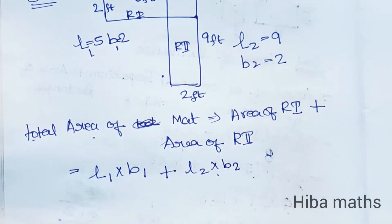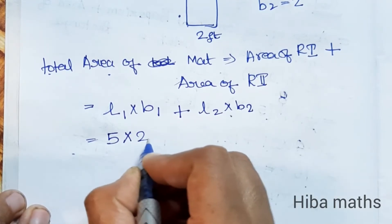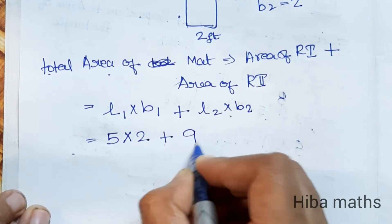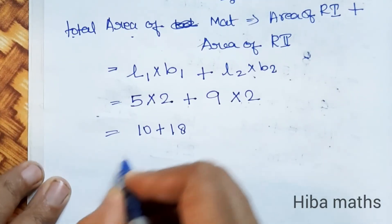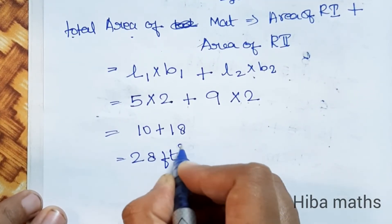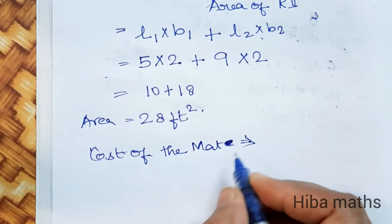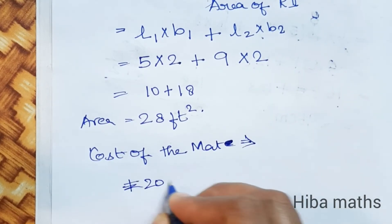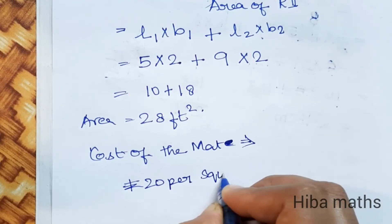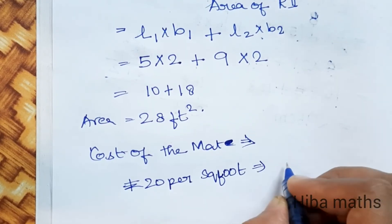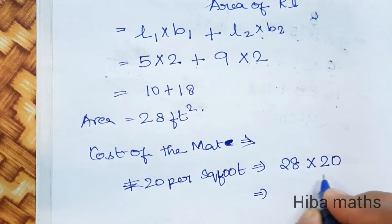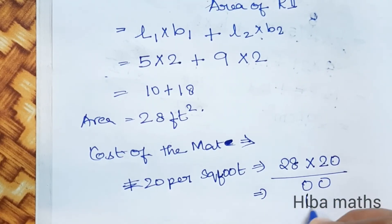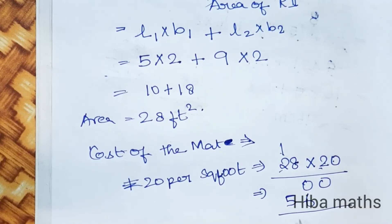L1 = 5, B1 = 2, L2 = 9, B2 = 2. So area of R1 = 5 × 2 = 10, and area of R2 = 9 × 2 = 18. Total area = 10 + 18 = 28 square feet. Cost of the mat: 28 square feet × 20 rupees per square foot = 560 rupees.